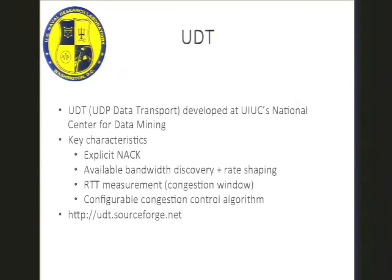The first reason is that UDT uses an explicit negative acknowledgment. In UDT, there are no duplicate acknowledgments — as soon as the recipient notices that there's something missing from the sequence numbers, it can report back immediately to the sender that those things are missing. This reduces the amount of time to recover from lost data.